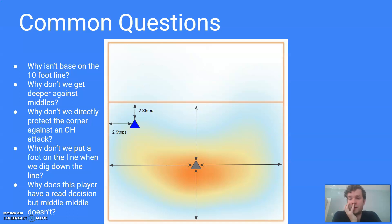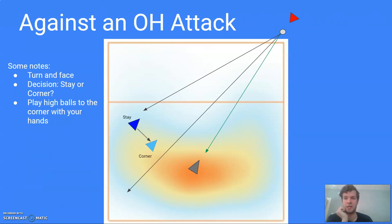Why don't we directly protect the corner against an outside attack? We could just go there automatically when the outside hitter is hitting. It seems like they're probably going to hit there more. And that is true. Probably outside hitters based on this heat map are going to hit that longer middle line in that direction more than they're going to hit this sharp cross towards the 10-foot line. But for one, we have a middle back defender nearby who can help with this.